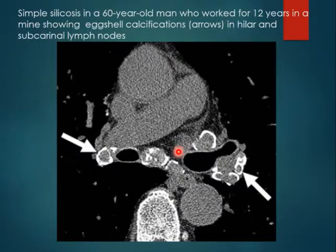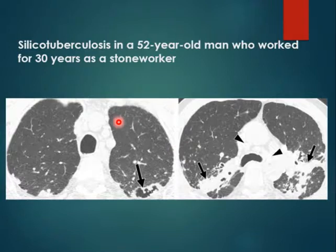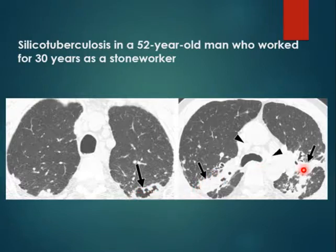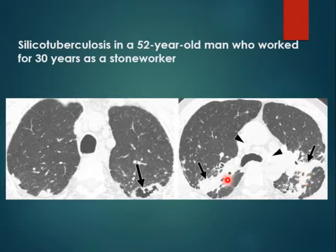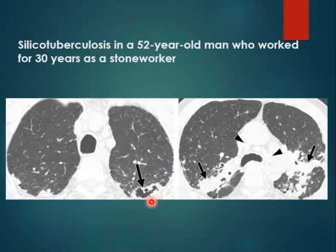Silicosis commonly associates with TB — up to 25% of cases, which is a large proportion. Here is silico-TB in a 52-year-old man who worked for 30 years as a stone worker. You can see a peripheral cavitating lesion with bilateral conglomerate masses, lymph nodes, fibrosis, and some centrilobular nodules — features of PMF in addition to the necrotic mass. The differential is either progressive massive fibrosis with cavitation, or silico-TB.